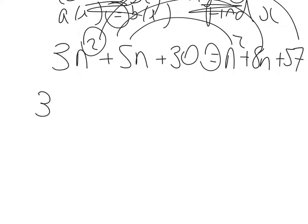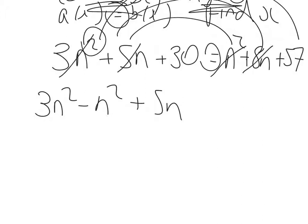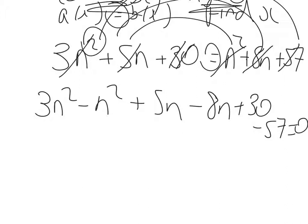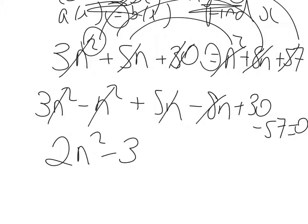So that will be 3n squared minus n squared plus 5n minus 8n plus 30 minus 57 is equal to 0. So 3n squared take away n squared is 2n squared. 5n take away 8n is minus 3n. And 30 take away 57 is minus 27, and that's equal to 0.